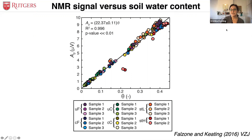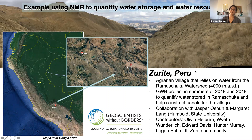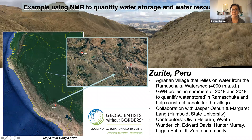Now I want to move to a field example where we've used NMR to quantify water storage and water resources. This field example comes from Zurite in Peru — an agrarian village that relies on water from the Ramashuka watershed, which is at 4,000 meters above sea level. This project was part of a Geoscientists Without Borders project run by Jasper Ocean and Margaret Langett of Humboldt State University. The goals were to quantify water stored in the Ramashuka and help construct canals for the village. Field data was collected in 2018 and 2019, with contributors mostly from Humboldt State, Temple University, and the University of Texas at Austin.